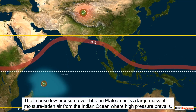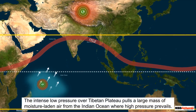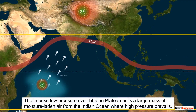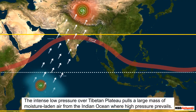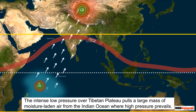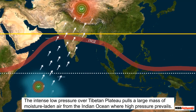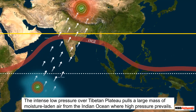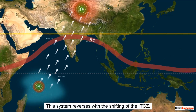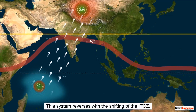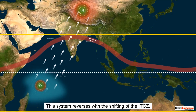The intense low-pressure system formed over the Tibetan plateau attracts air from the intense high-pressure system that develops over the Indian Ocean near Madagascar, island of Africa. This causes a strong pull of moisture-laden air mass from the ocean to the landmass of India. While the shifting of the ITCZ causes the pressure system to reverse, the wind also reverses direction.